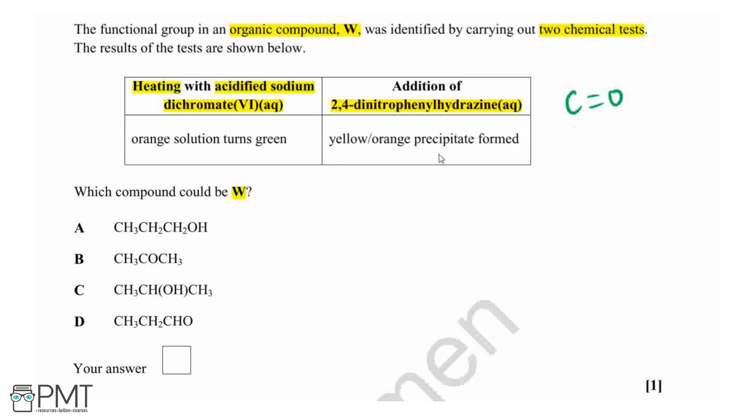We've had a positive result for the first test and a positive result for the second test, so our answer will have to be option D because that is an aldehyde. Therefore it will get oxidized with this oxidizing agent and will also have a positive result for that carbonyl bond. And that's how you answer this question.